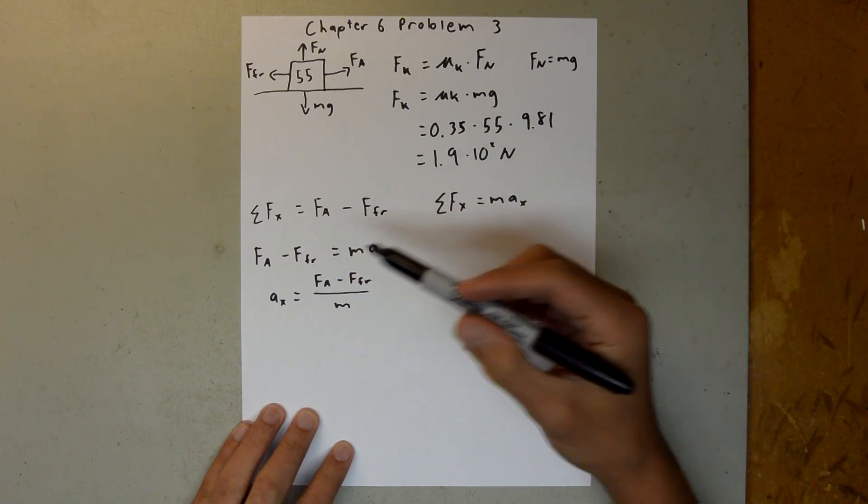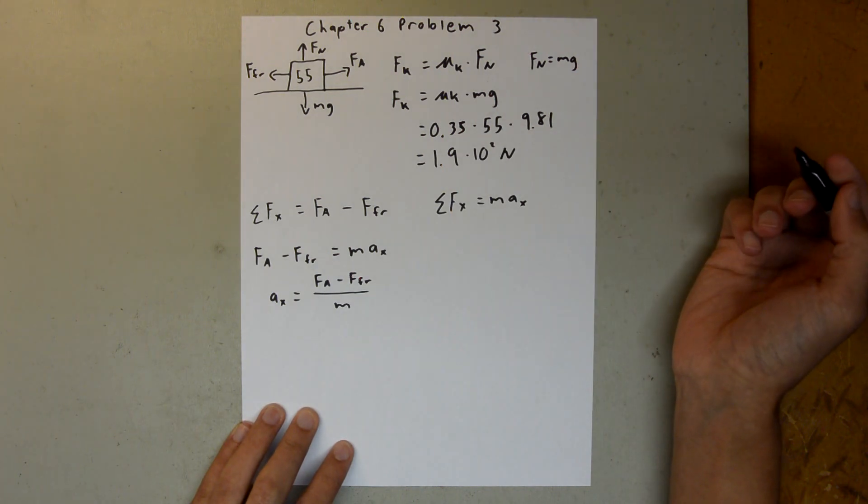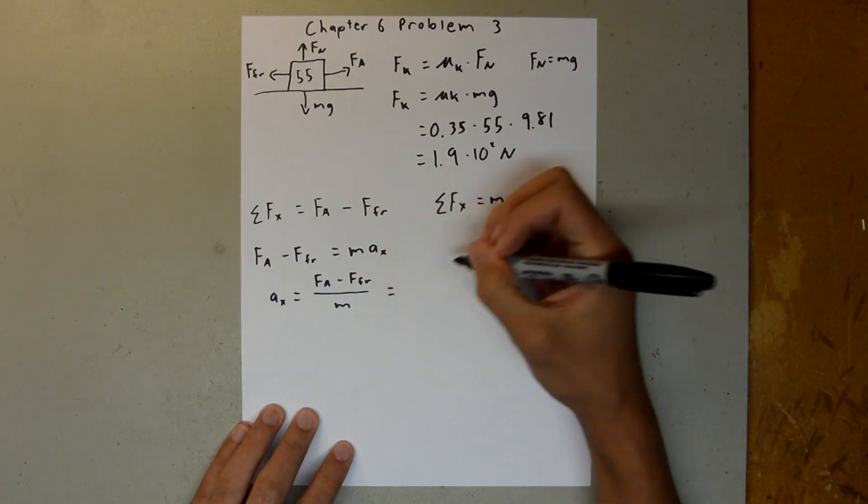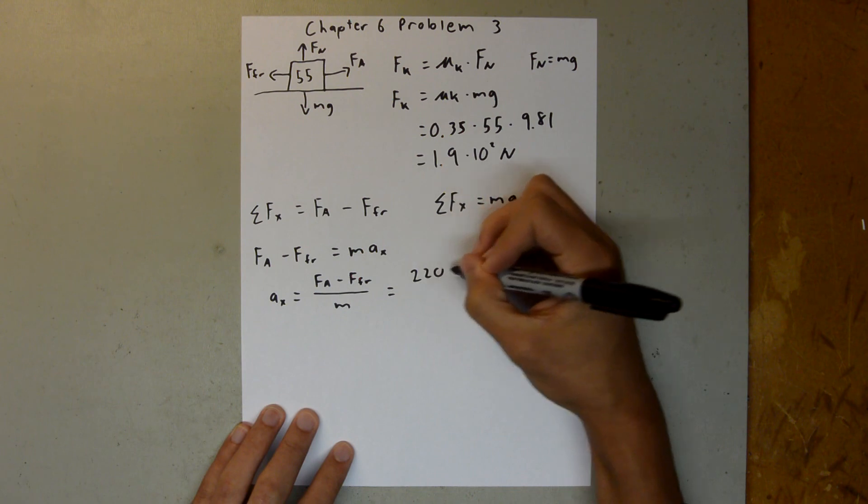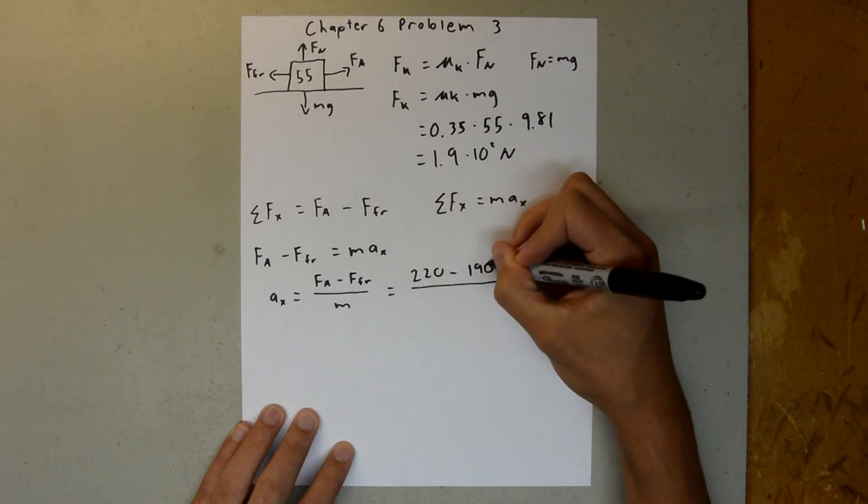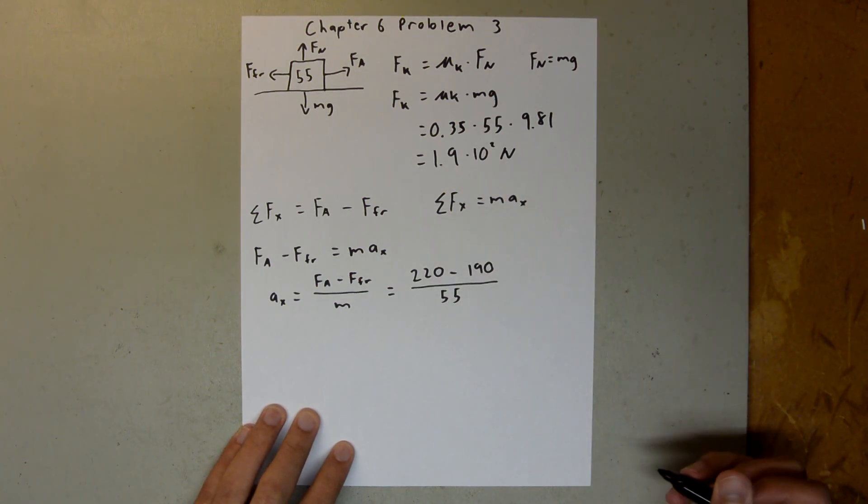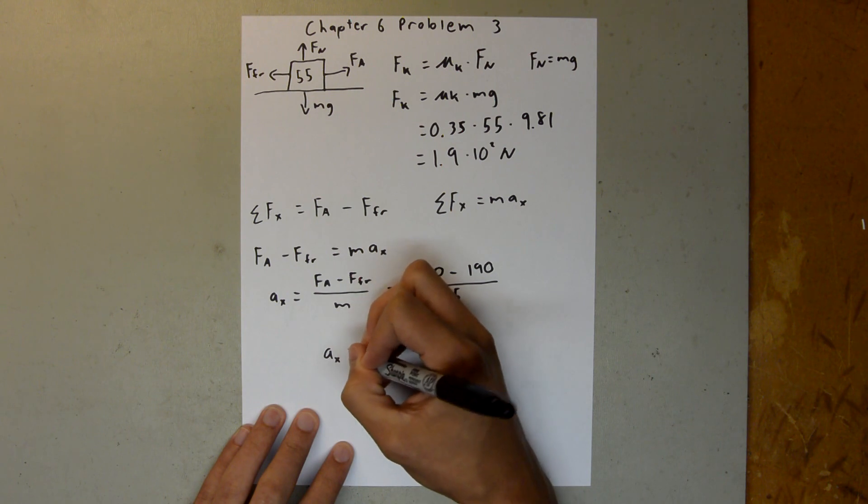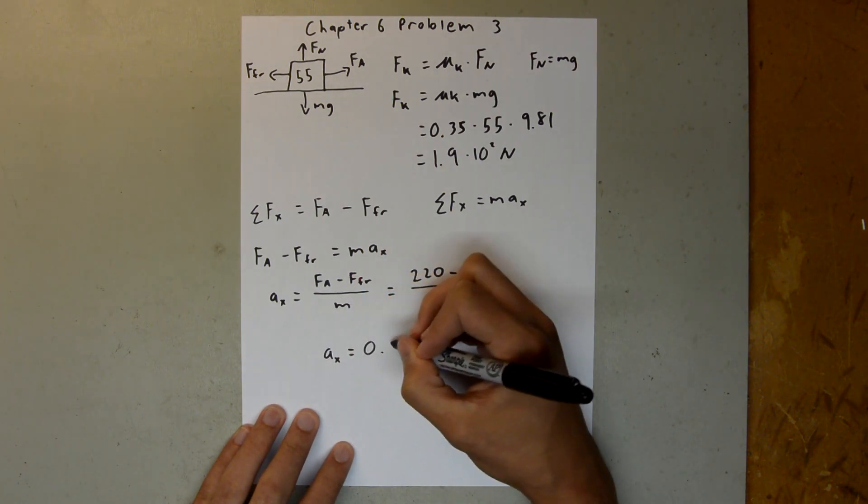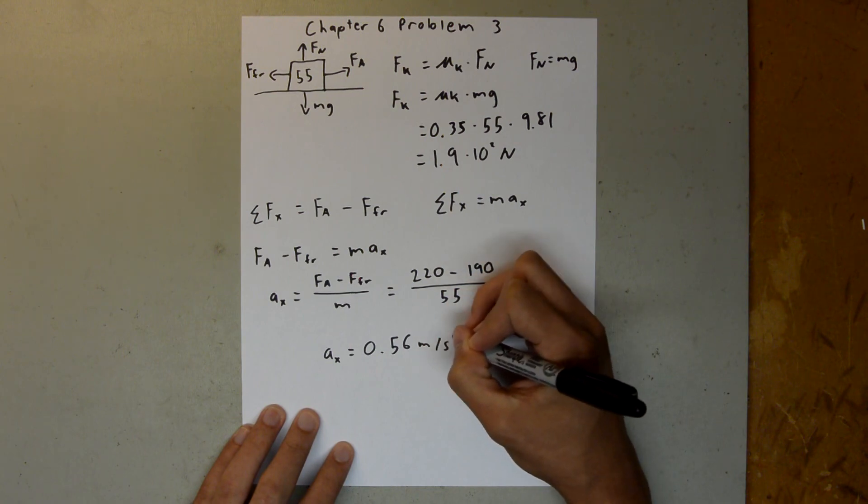And we have these two values, and we found this value in the last part of the question, so we can plug all those values in. And so we have 220 minus 190 divided by 55. And if you plug that into your calculator, you should get that the acceleration of the box is 0.56 meters per second squared.